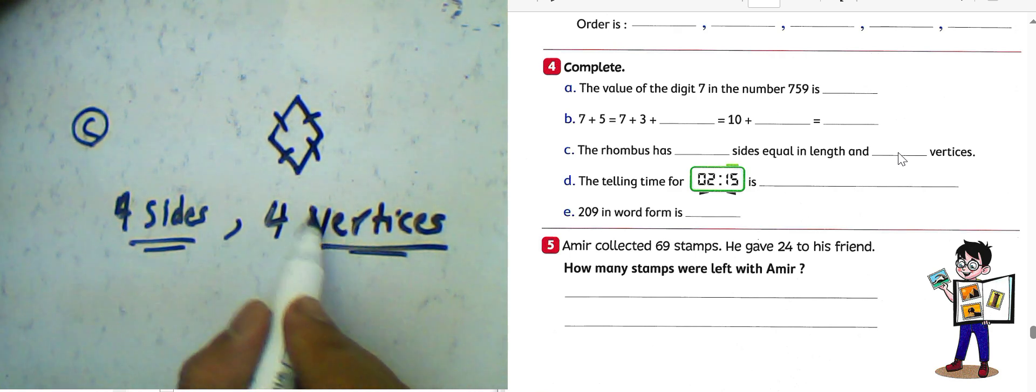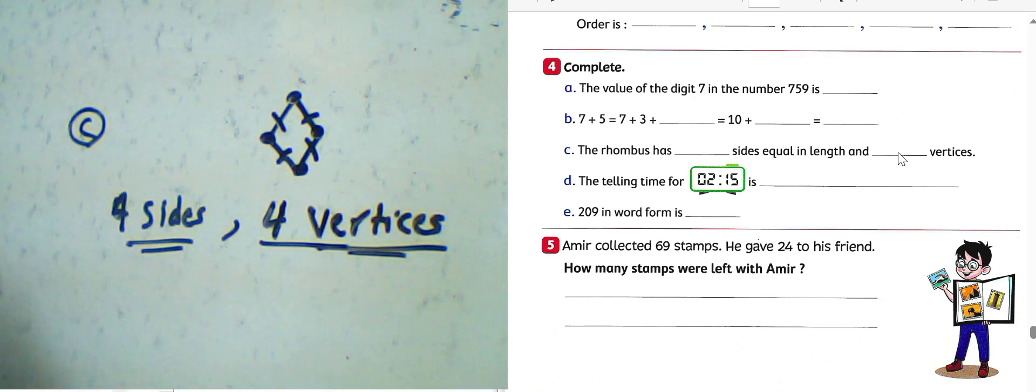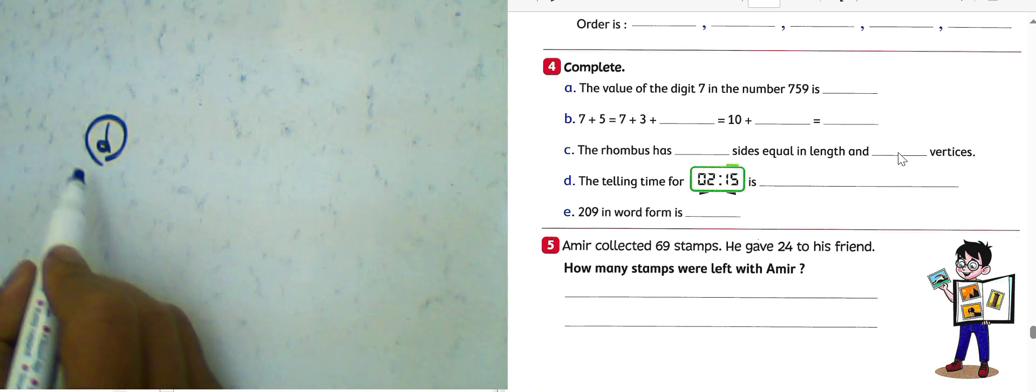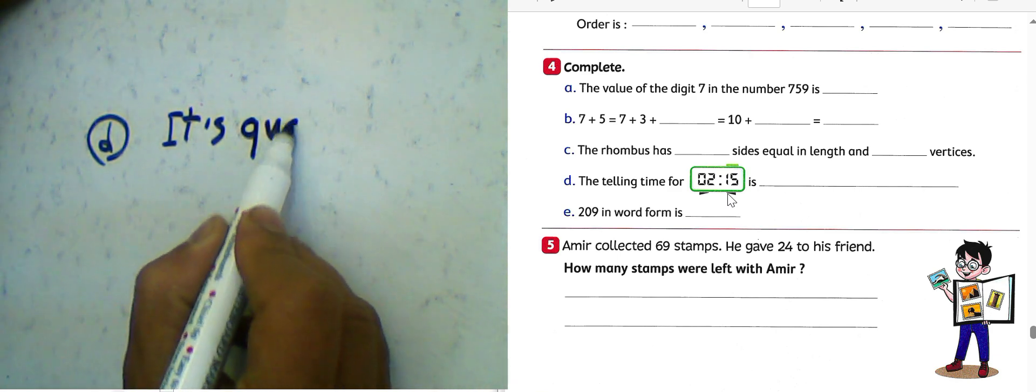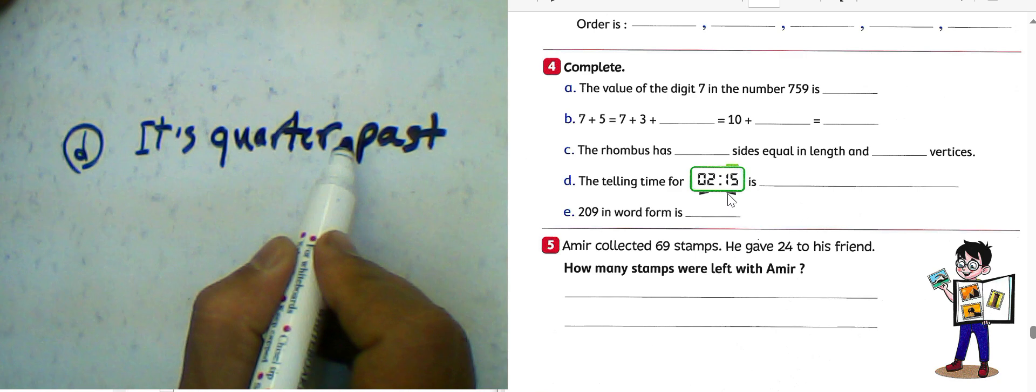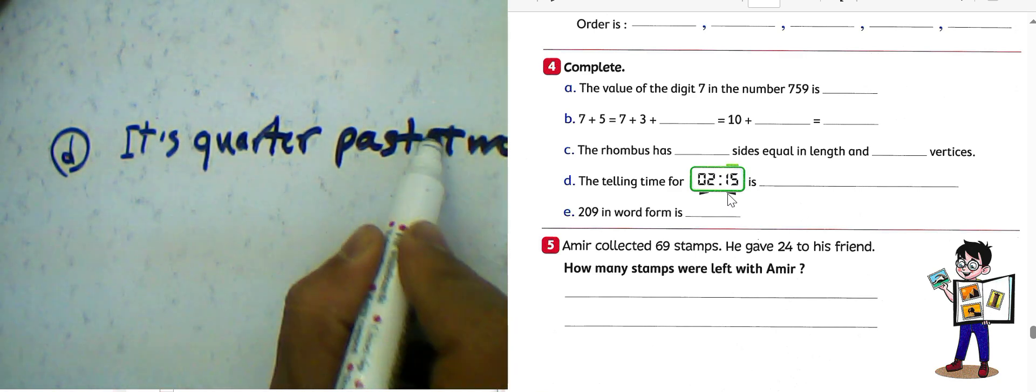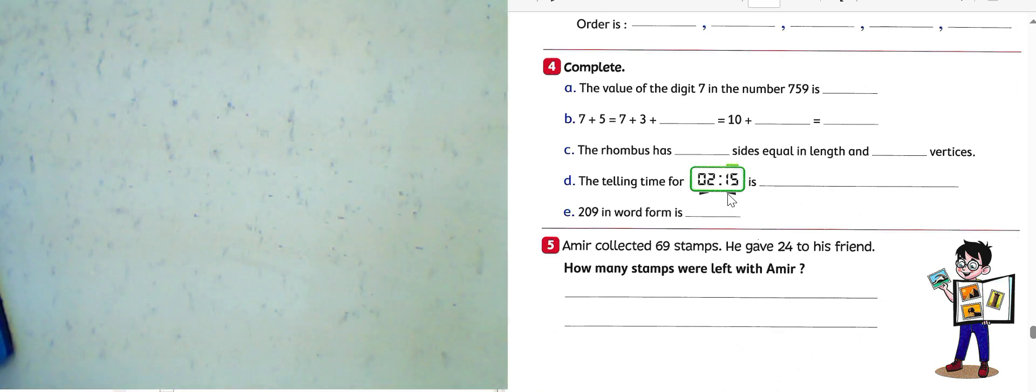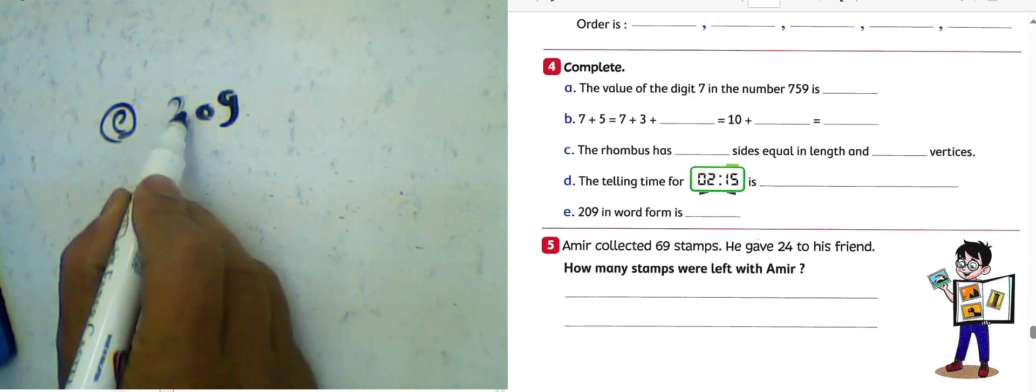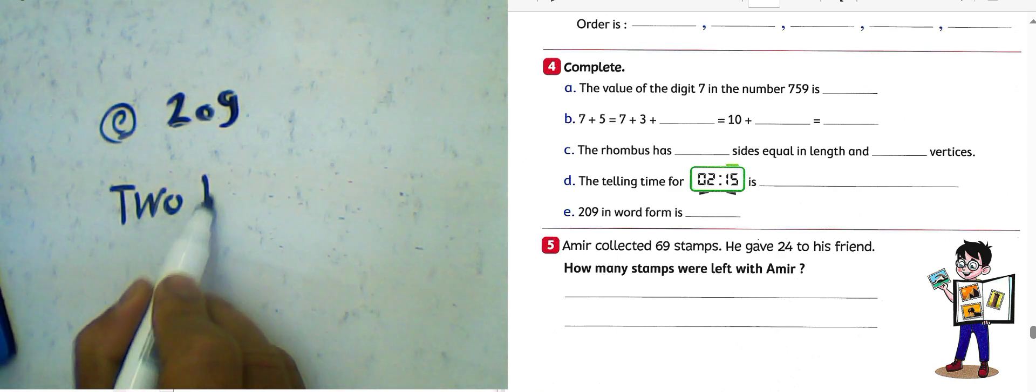The shape has four vertices, 1, 2, 3, 4. Next question, letter D, the telling time: 2 and 15 minutes. We can write it's a quarter past two. Letter E: we have 209, write in word form, we can write 200 and 9, two hundred and nine.